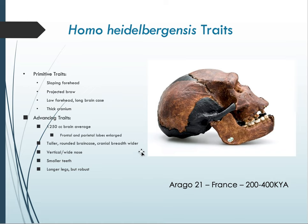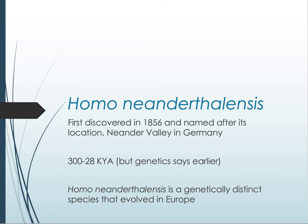This behavioral shift may have to do with the increase in the frontal lobe, which is associated with planning and reasoning. You're going to have Homo heidelbergensis samples in your lab, and you'll want to compare them with our next two species. The first is Homo neanderthalensis, the first of which was discovered in 1856 and named after its location: the Neander Valley in Germany.